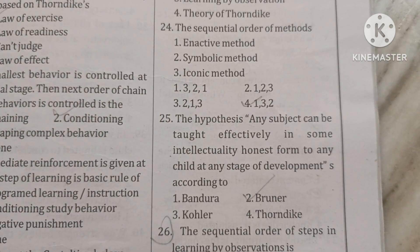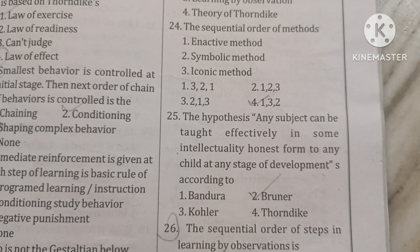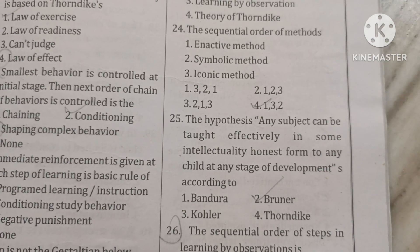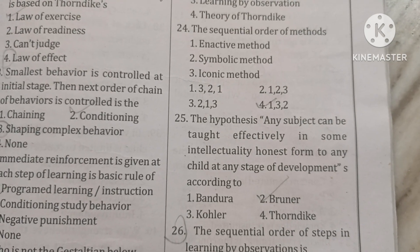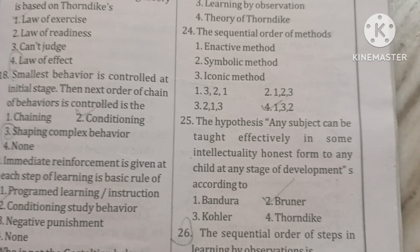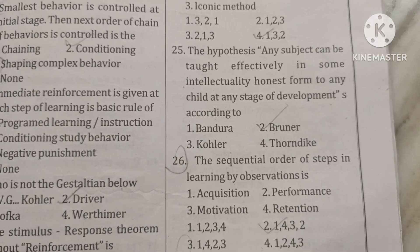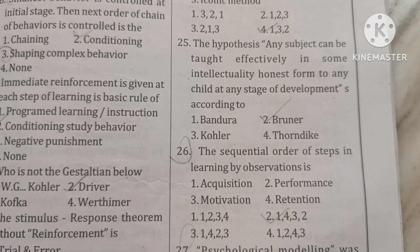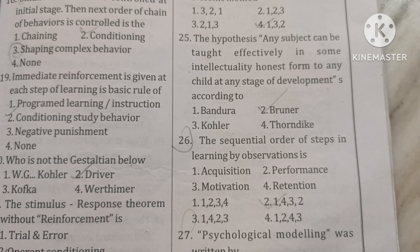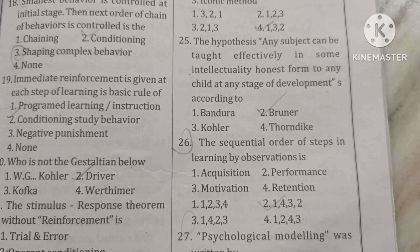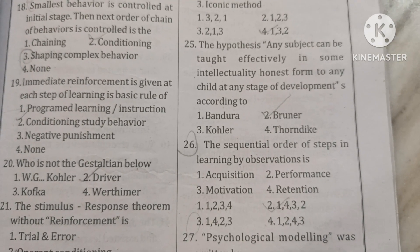The hypothesis: any subject can be taught effectively in some intellectually honest form to any child at any stage of development — this is according to Bruner. The sequential order of steps in learning by observation is: first, acquisition; second, retention; next, performance; and last, motivation.